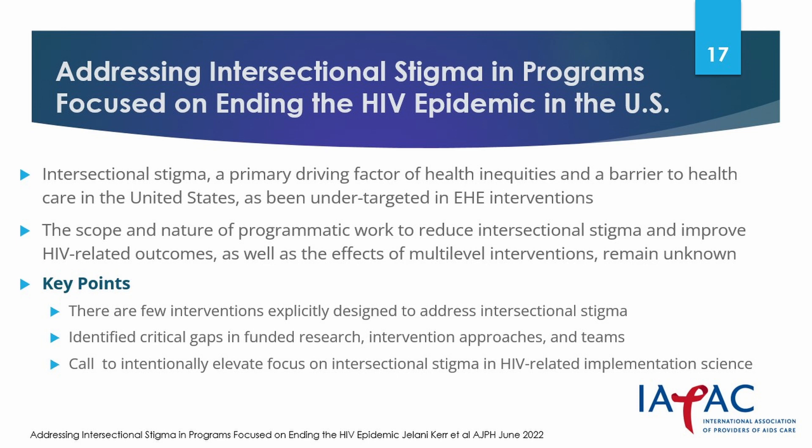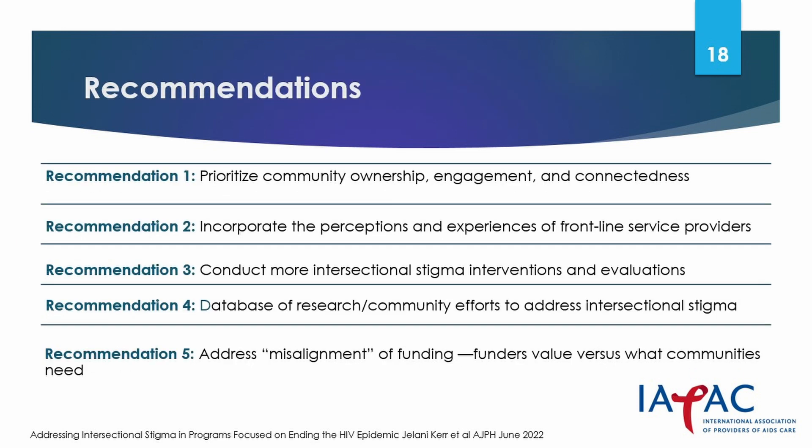The paper identified the scope and nature of program work to reduce intersectional stigma and improve health-related outcomes. Some of the recommendations include: prioritize community ownership, education and connectedness; incorporate the perceptions and experiences of frontline workers and service providers; conduct more intersectional stigma interventions and evaluations; develop a database of research and community efforts to address intersectional stigma; and address the misalignment of funding between what funders value and what community needs.